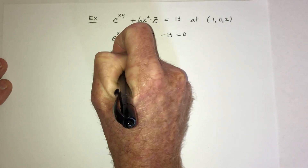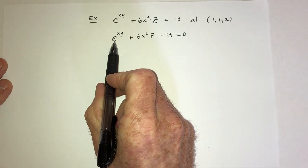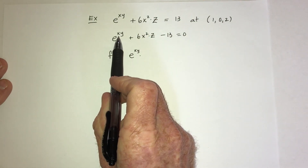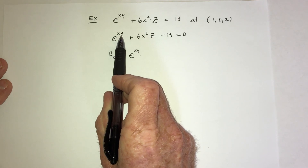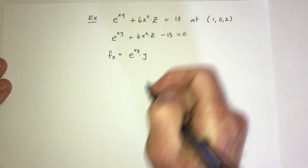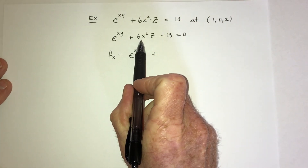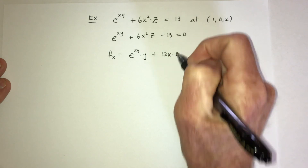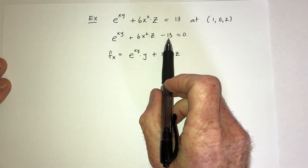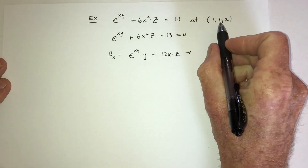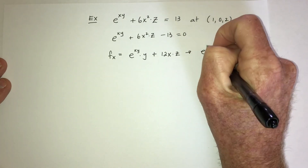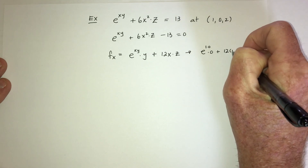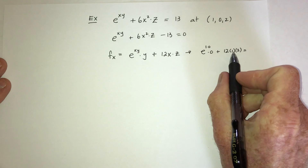Now take the derivative with respect to x. The derivative of the e-function is the e-function itself, then chain rule — the derivative of xy with respect to x gives y. Then the derivative of 6x²z gives 12xz. Plugging in (1, 0, 2): e^(1·0) times 0 plus 12 times 1 times 2 gives 0 plus 24, so Fₓ = 24.